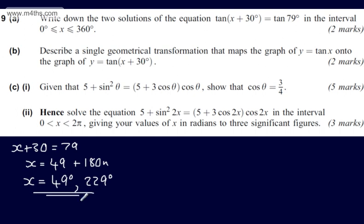So part A is done – 49 and 229 degrees. In part B, again for two marks, we need to describe a single geometrical transformation that maps the graph of y is equal to tan x onto the graph of y is equal to the tan of x plus 30 degrees.